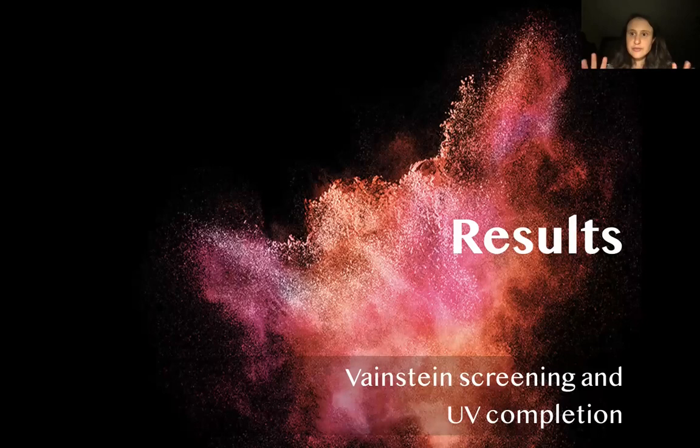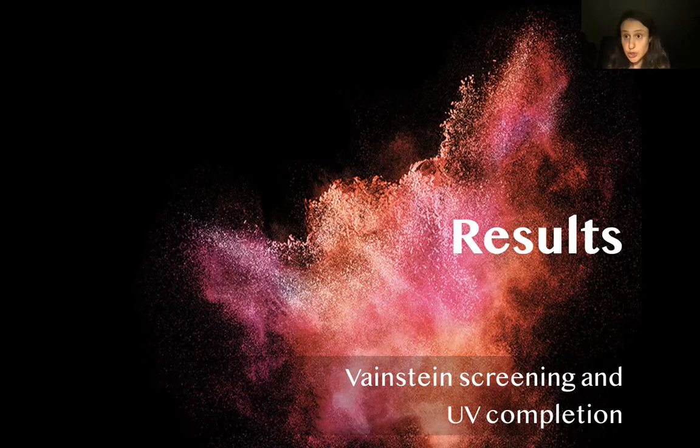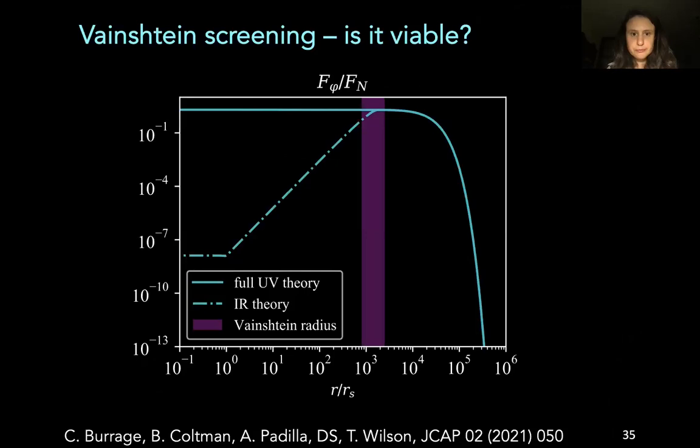Now is the time finally for some results. Do the two theories look anything like each other? Does the UV complete theory screen? What happens to the tower of operators, does it converge? And the answer is that the two theories look nothing like each other. So here what I'm showing you is the ratio of the fifth force to the Newton force for the two different theories. And as you can see the low energy theory screens quite a lot so you can have actually a suppression up to 10 to the minus eight times the Newton force for the scalar force and instead the UV complete theory doesn't screen at all. And it looks like the IR theory actually starts to break down precisely around the Vainshtein radius. So the Vainshtein radius is simultaneously the radius at which your non-linearities are supposed to kick in and screen but it looks like it's also the scale at which the limit of validity of your low energy theory ceases to be. So it's also the place where you should stop trusting your low energy theory because you are beyond its limit of validity.